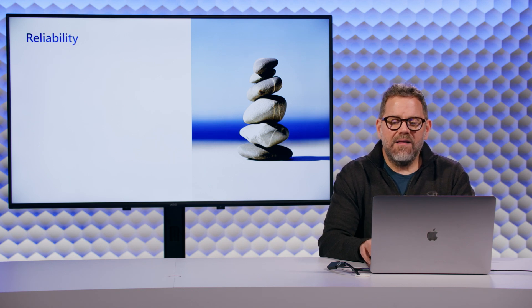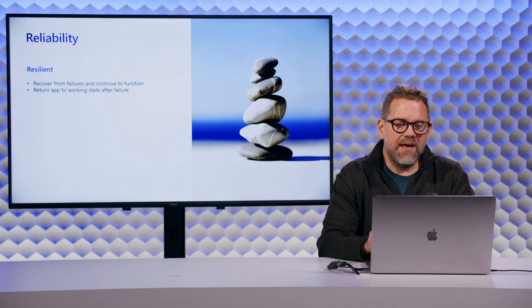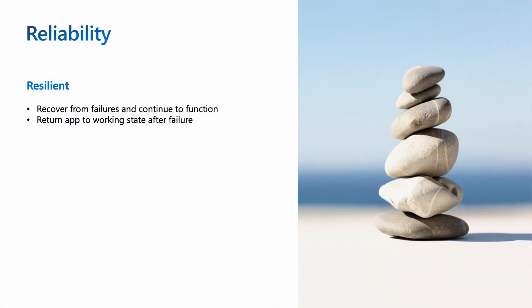There are two main points in reliability. The first thing we want to consider is resiliency — the ability for apps to recover from failures and continue to function, and to return the app to a working state after a failure. Ideally, your users are not going to even notice the app had an issue at all. They'll be able to happily continue using the web app without knowing something went down on the back end. That's resiliency.